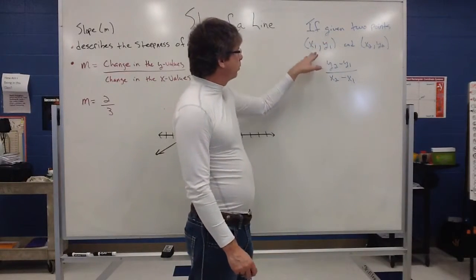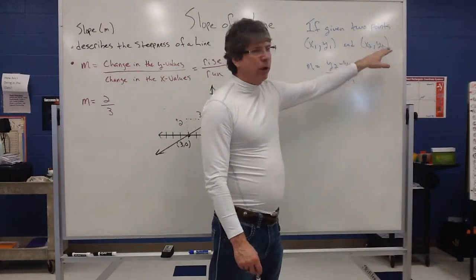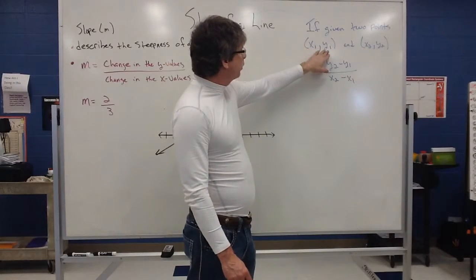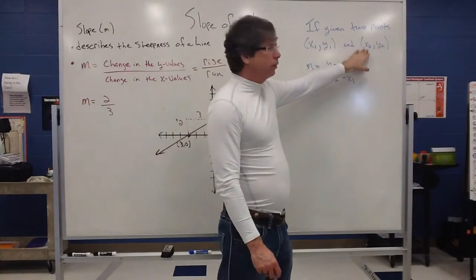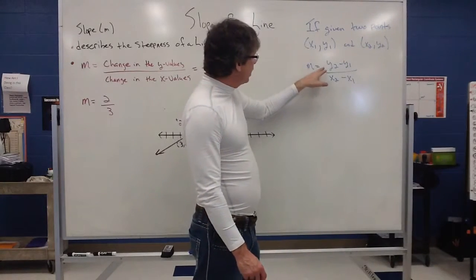If you're given two points, point one is denoted as x1, y1, and point two is denoted as x2, y2. So, the x-coordinate of the first point, y-coordinate of the first point, where this is the x-coordinate of the second point, and the y-coordinate of the second point.